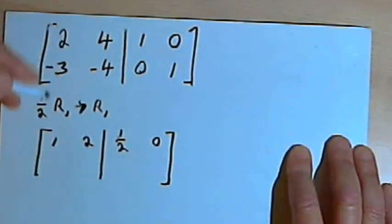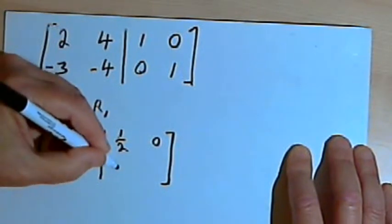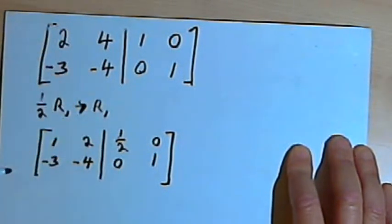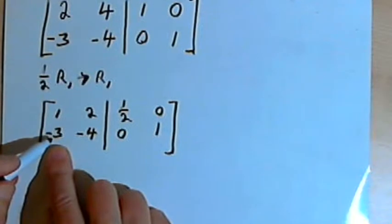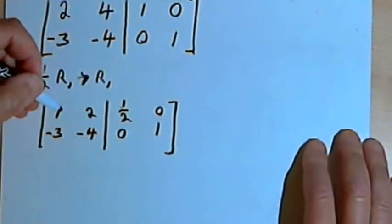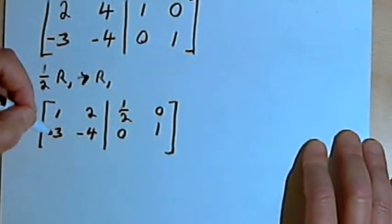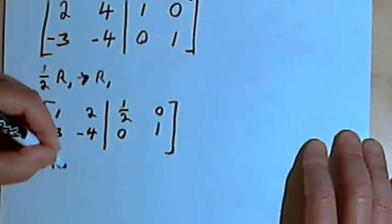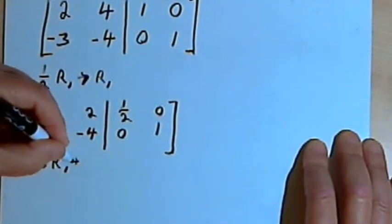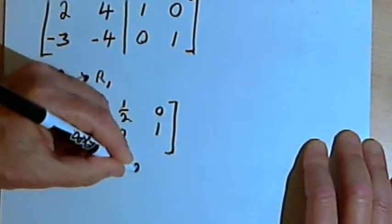The second row stays the same: negative 3, negative 4, 0, and 1. Now in the second row I've got this negative 3 in the first column, and I want that to become a 0. So I'll take the first row, multiply it by 3, add it to the second row, and make that the new second row. So 3 times row 1 plus row 2 becomes the new row 2.